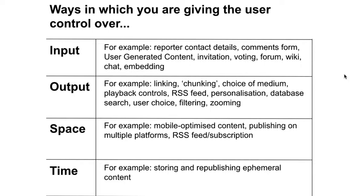Extending the idea of control further, you might also consider different dimensions: whether users can control input into the story, whether they control the output — what form the story takes — whether they have control over space, such as something being mobile versus fixed on a desktop, and whether they have control over time. Live content involves the user having to be there at the time, so are they able to access it later? Can they store it? Can it be archived? These give you different dimensions around which to think about interactivity in your storytelling.